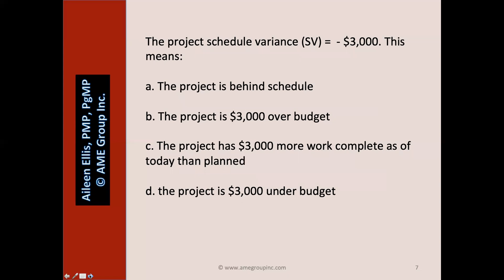Here we have another sample question. The project schedule variance equals negative $3,000. Pause the video and answer the question. Is this about schedule or cost? This is definitely about schedule. Answer B, 'the project is $3,000 over budget,' must be wrong — that's about cost. Answer D, 'the project is $3,000 under budget,' must also be wrong — that's about cost, not schedule.